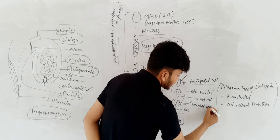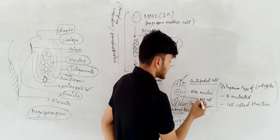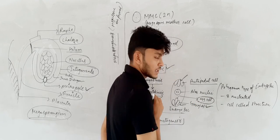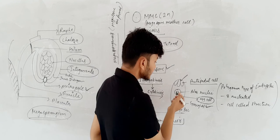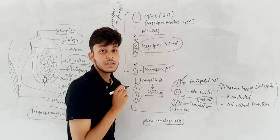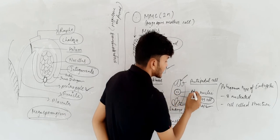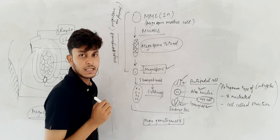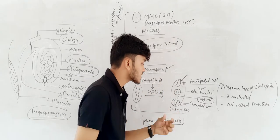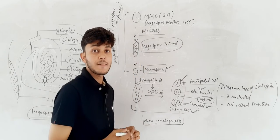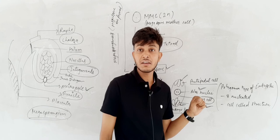After cytokinesis, the nuclei are arranged as follows: at one end there are cells called synergids, and in the middle there is a large cell known as the egg cell, which will play an important role in fruit formation. There are also two nuclei called polar nuclei. The whole structure forms an embryo sac, which is an 8-nucleated structure containing 7 cells.